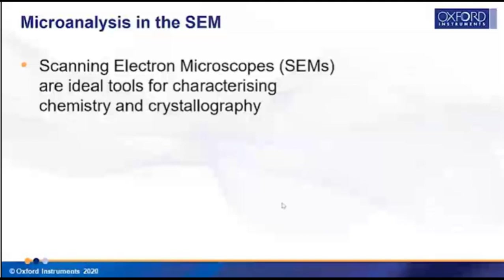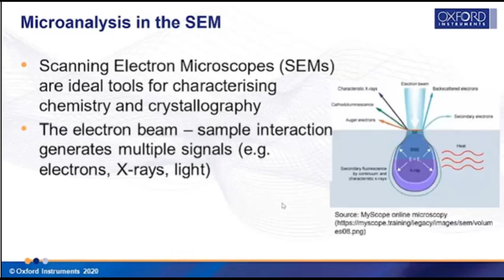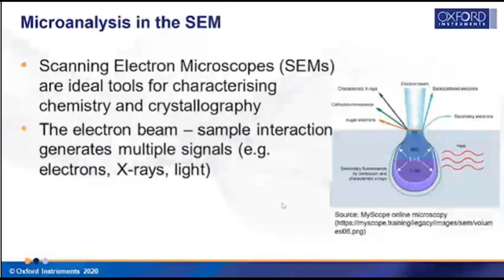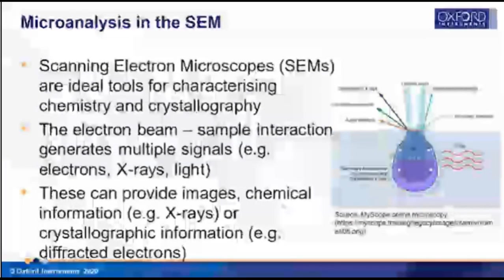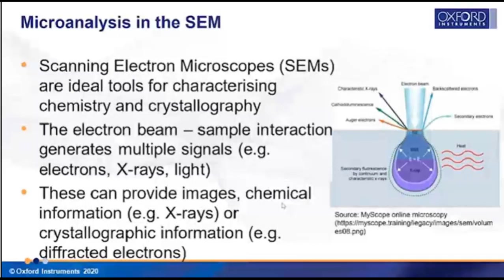The scanning electron microscope is an ideal tool for characterizing chemistry and crystallography. When we point the focused electron beam onto the sample, the electrons interact with the sample material and generate multiple signals. These can be characteristic X-rays, cathodoluminescence, Auger electrons, secondary electrons, backscattered electrons, and so on. All of these signals can be used in multiple different ways — to provide images, chemical information, or crystallographic and structural information.